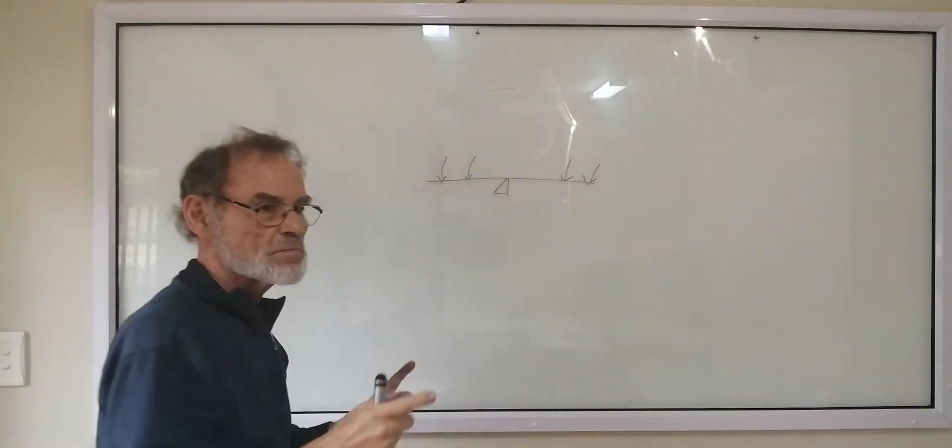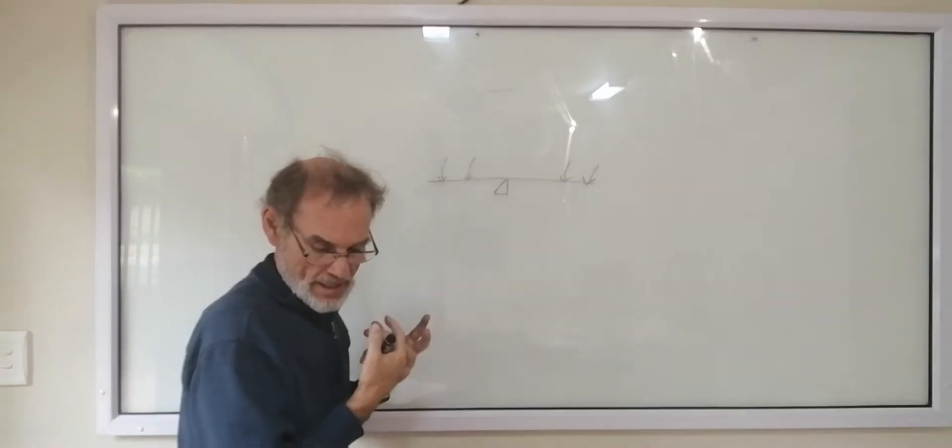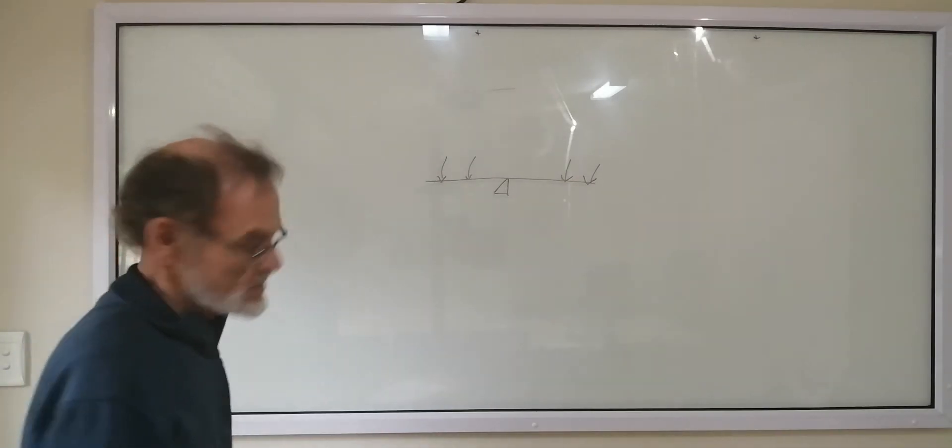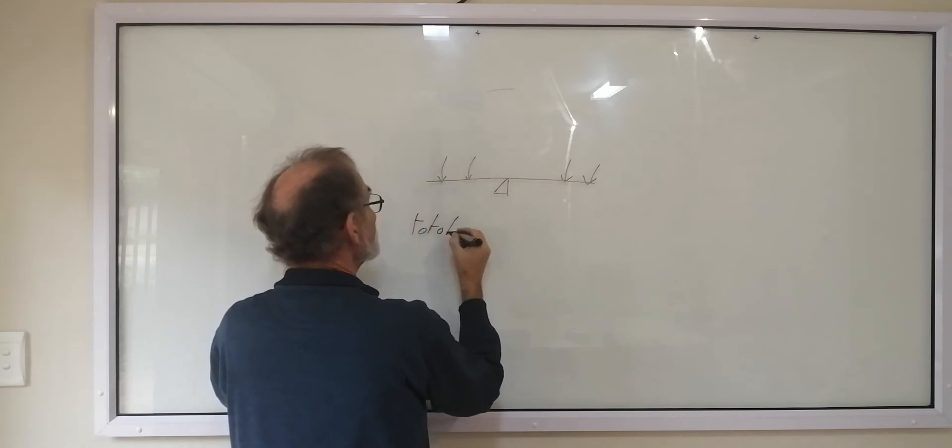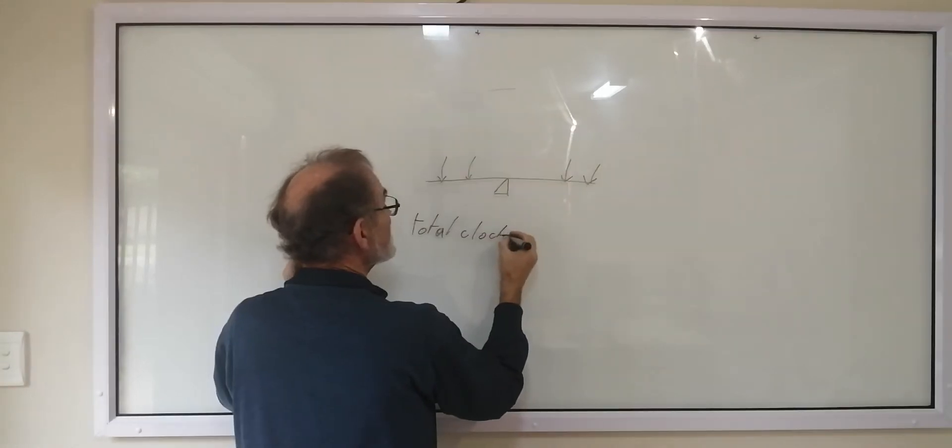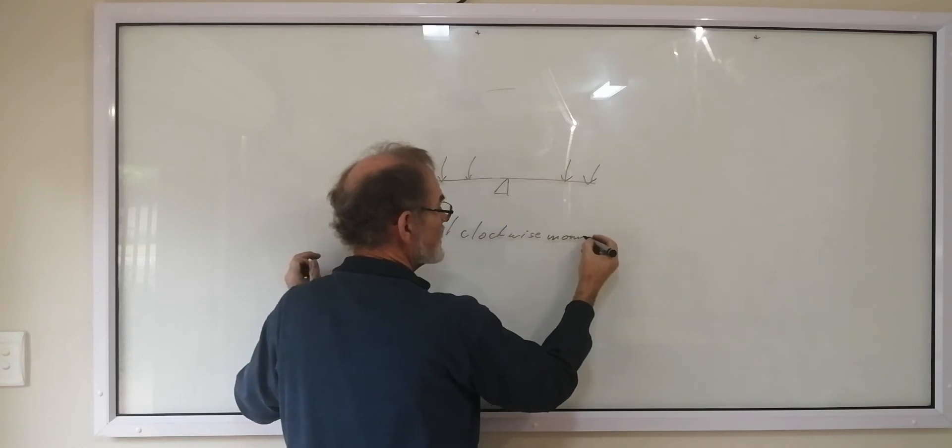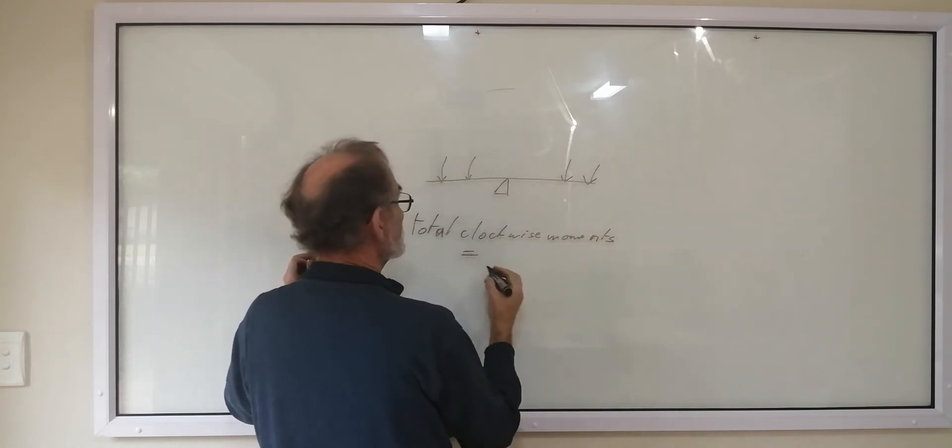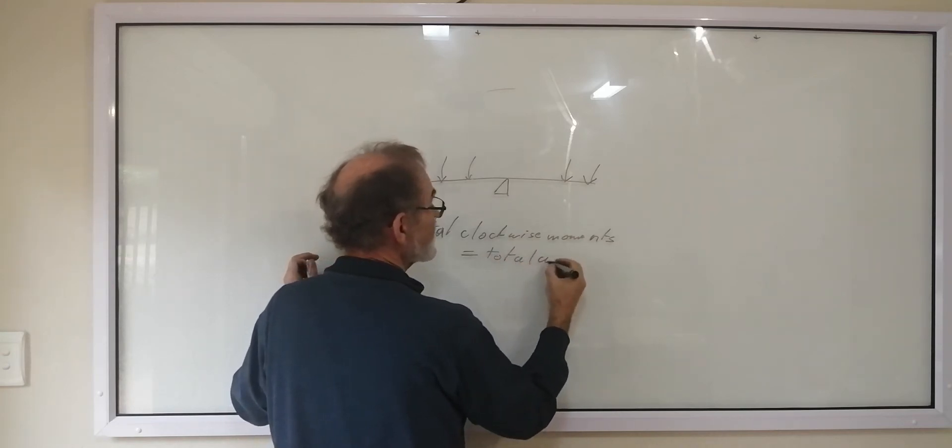And two moments being equal means there's no resultant force. So when it's balanced, then we say the total, or the sum of the clockwise moment is equal to the total anti-clockwise moment.